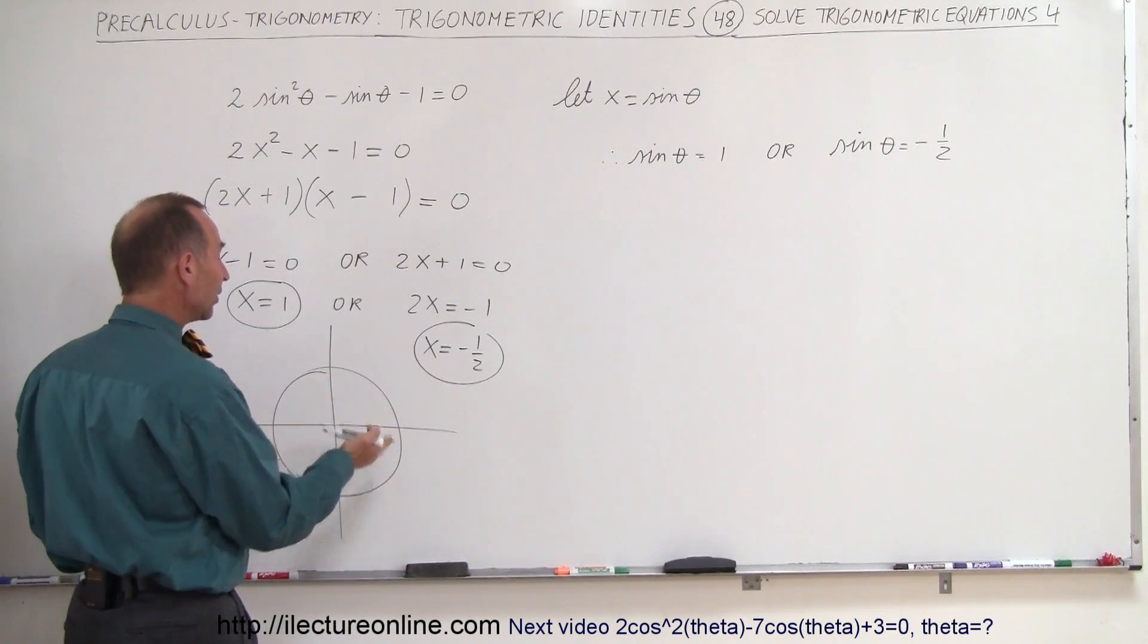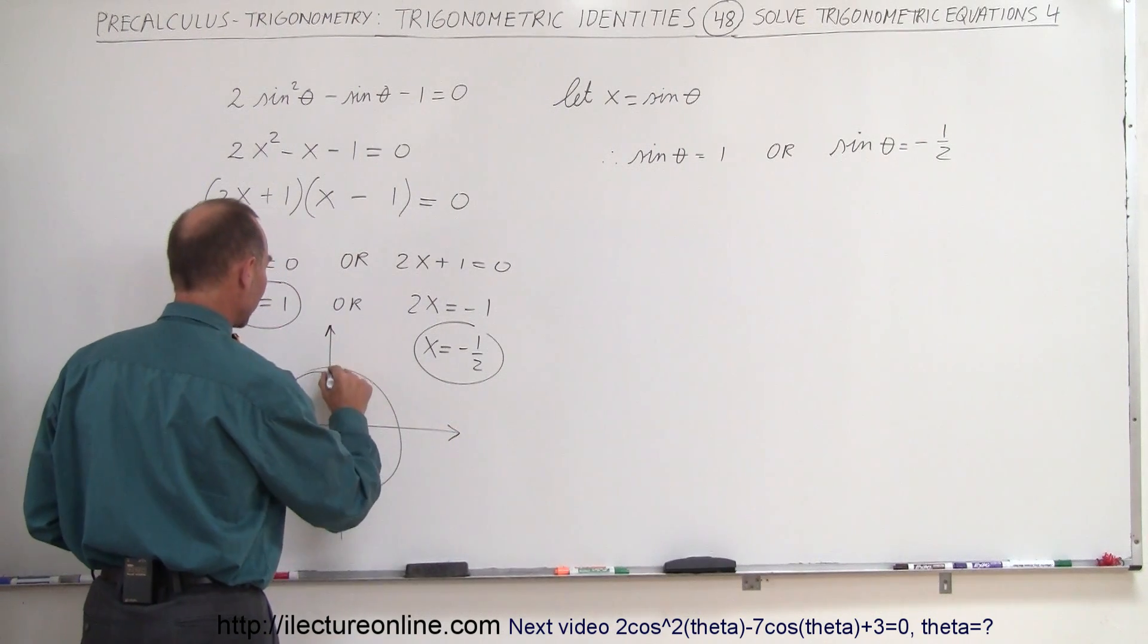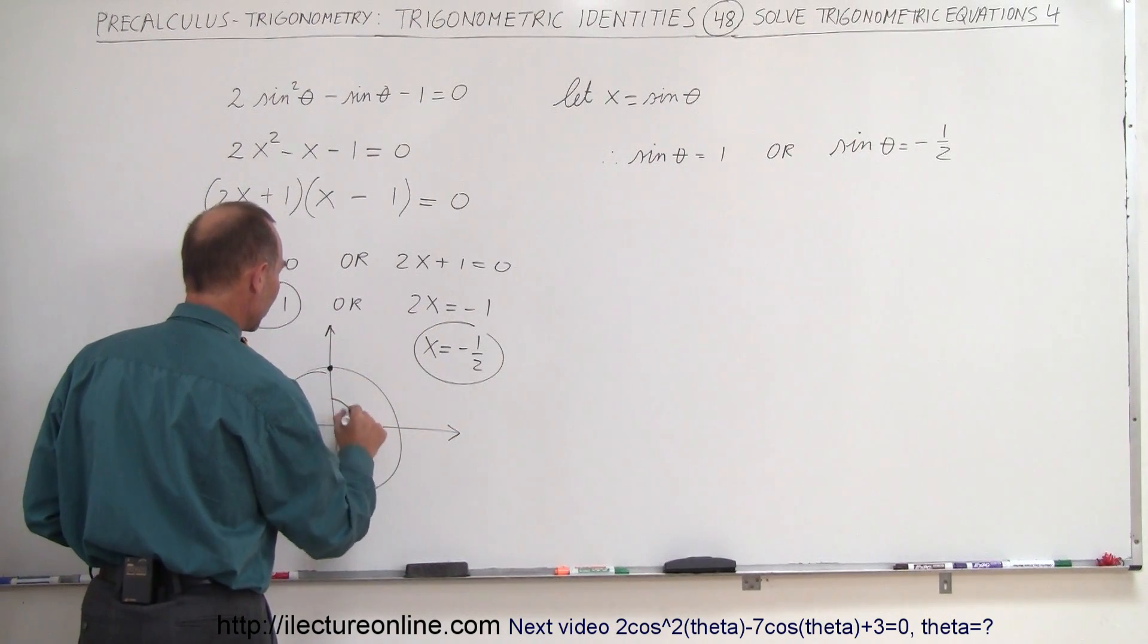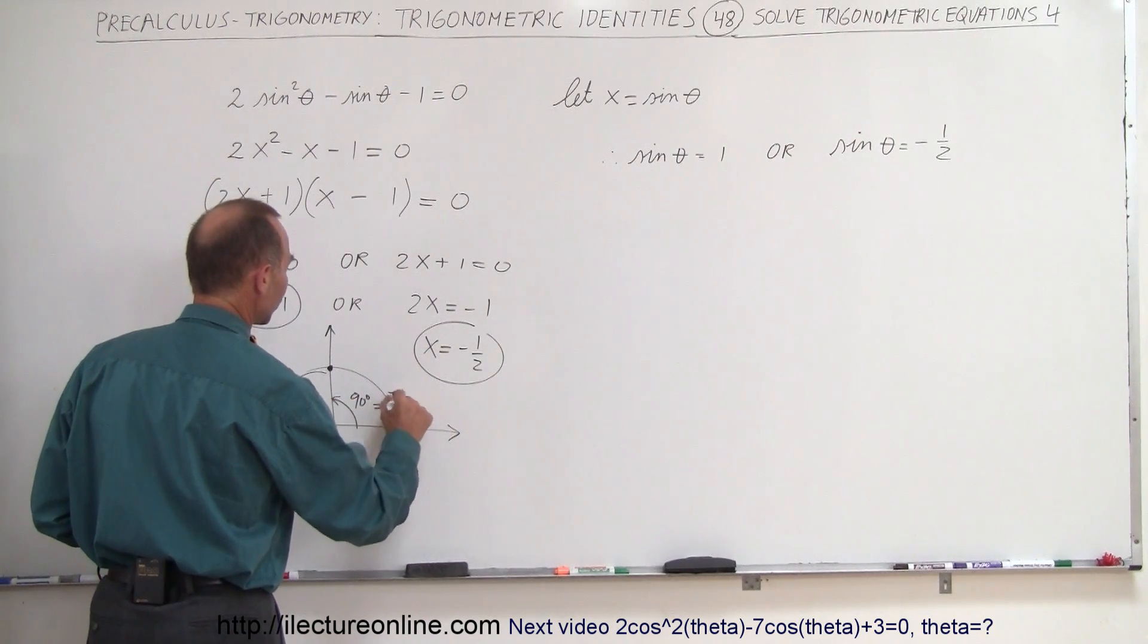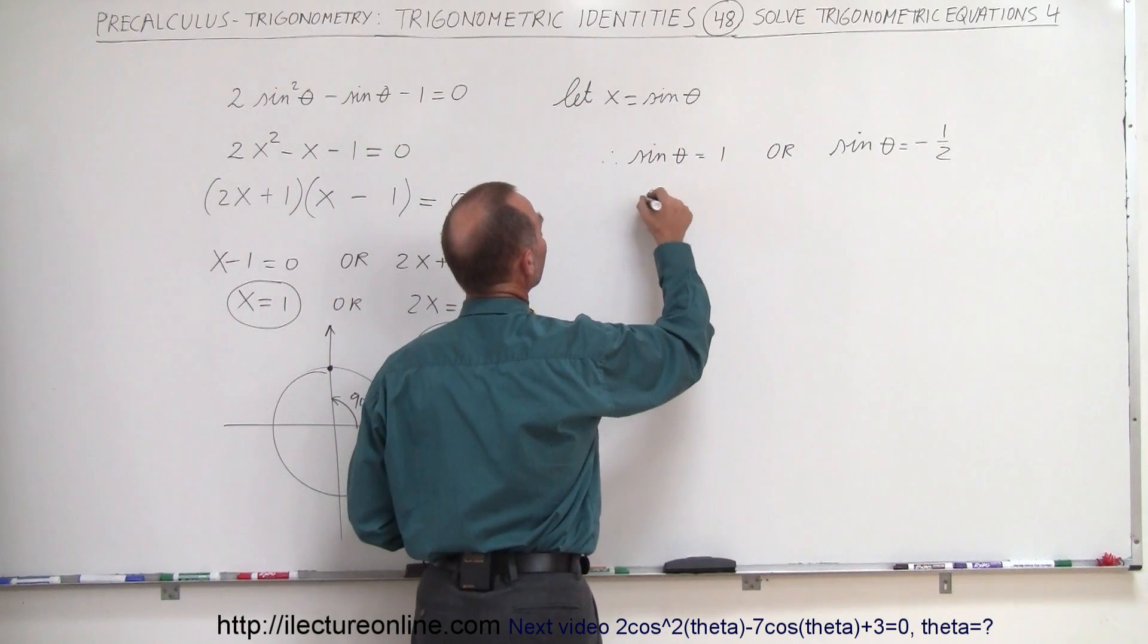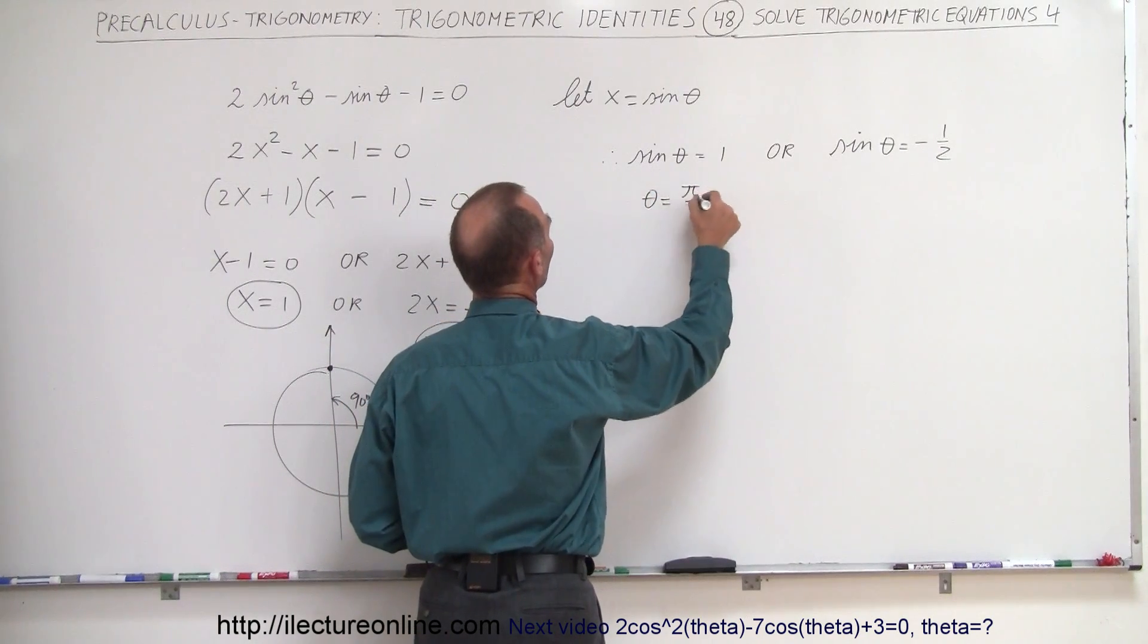Remember, the sine of the angle is the y value on the unit circle. And so that can only be 1 at this point right there. That means we're looking for an angle of 90 degrees, which is equal to pi over 2. So in that case, we know that theta is equal to pi over 2.